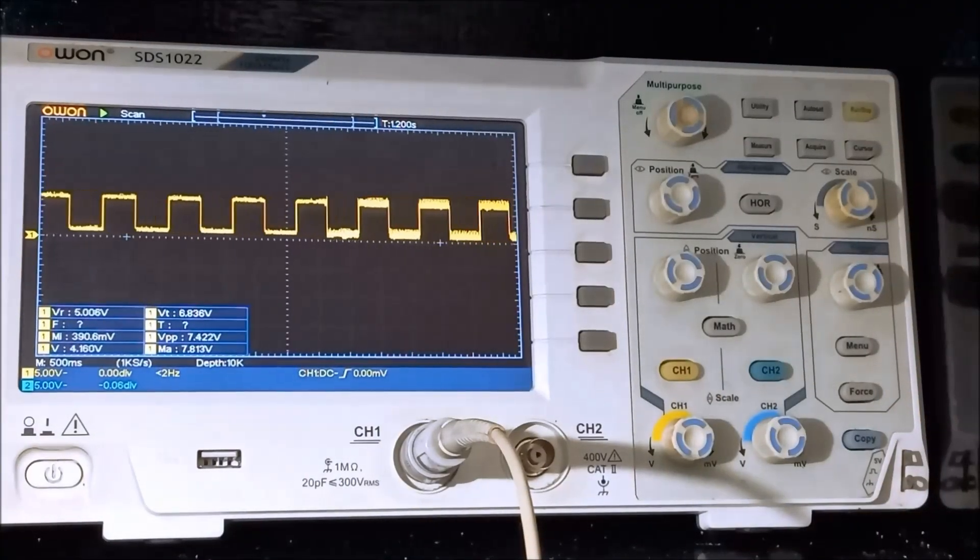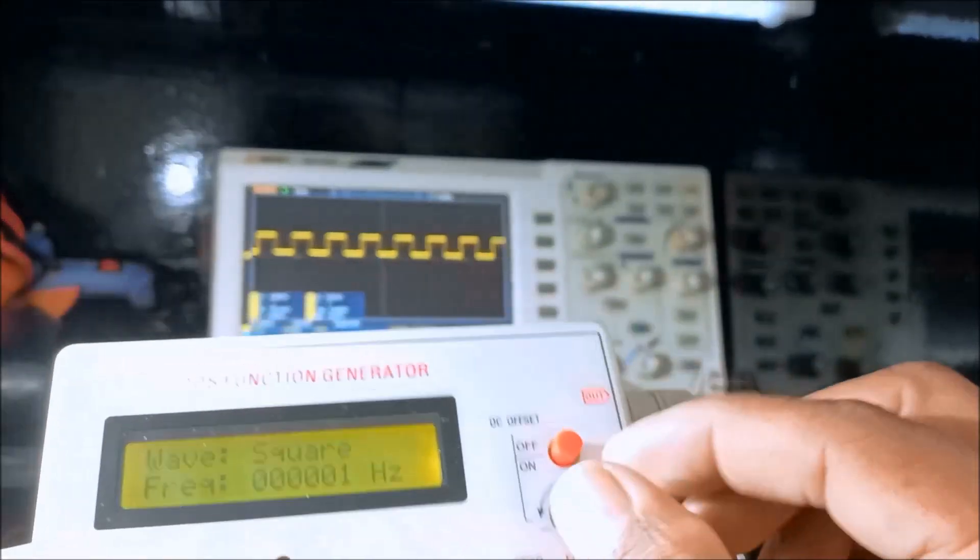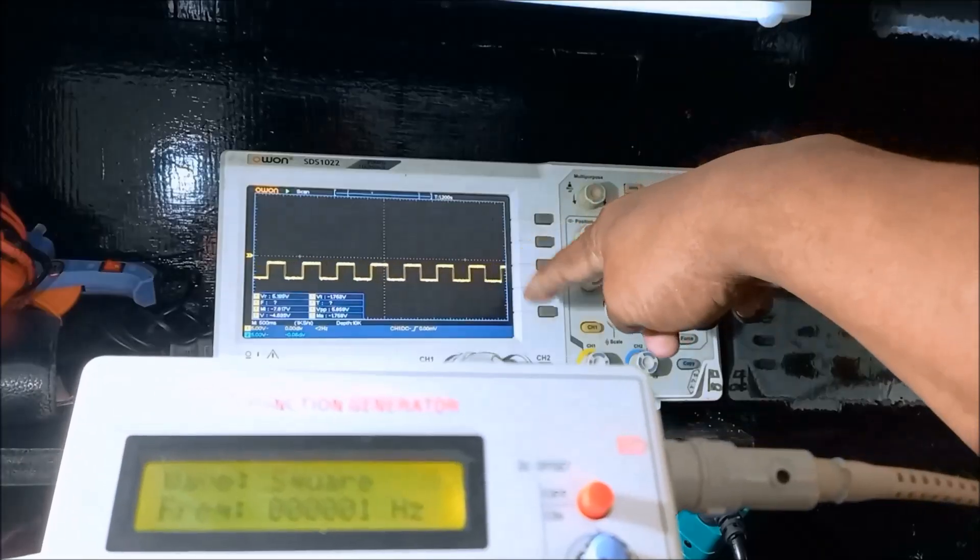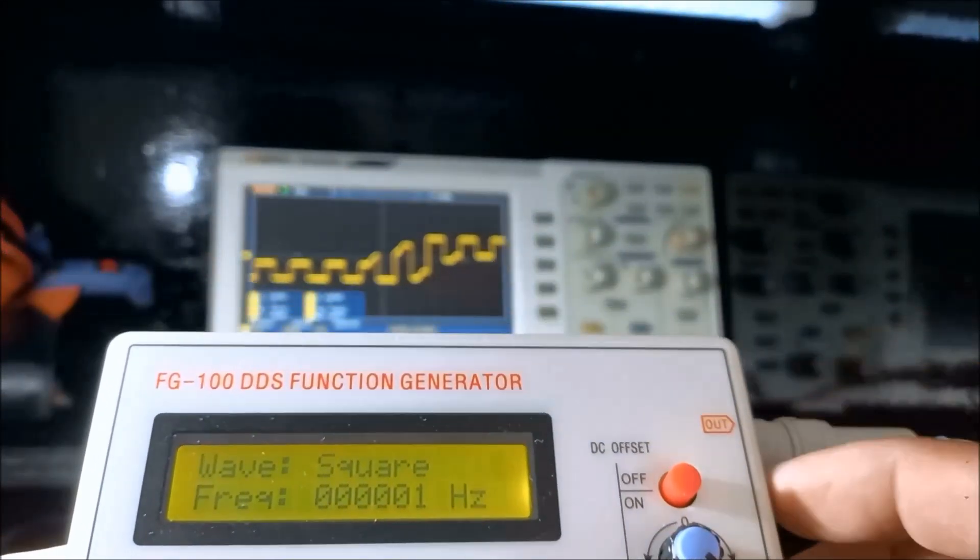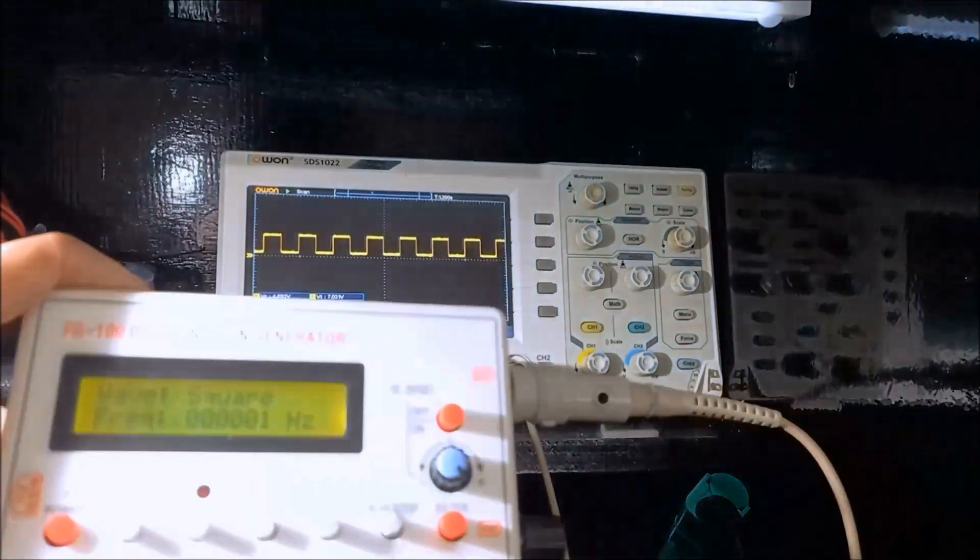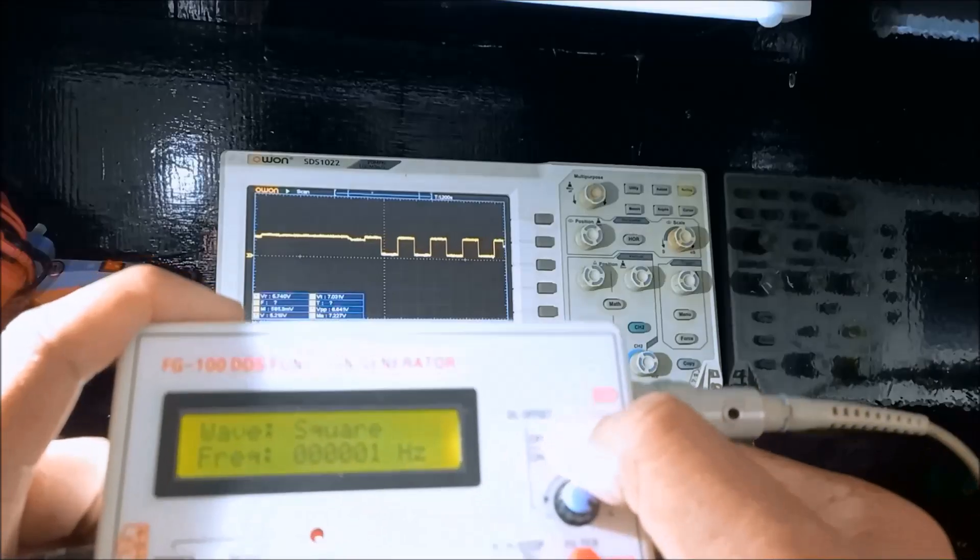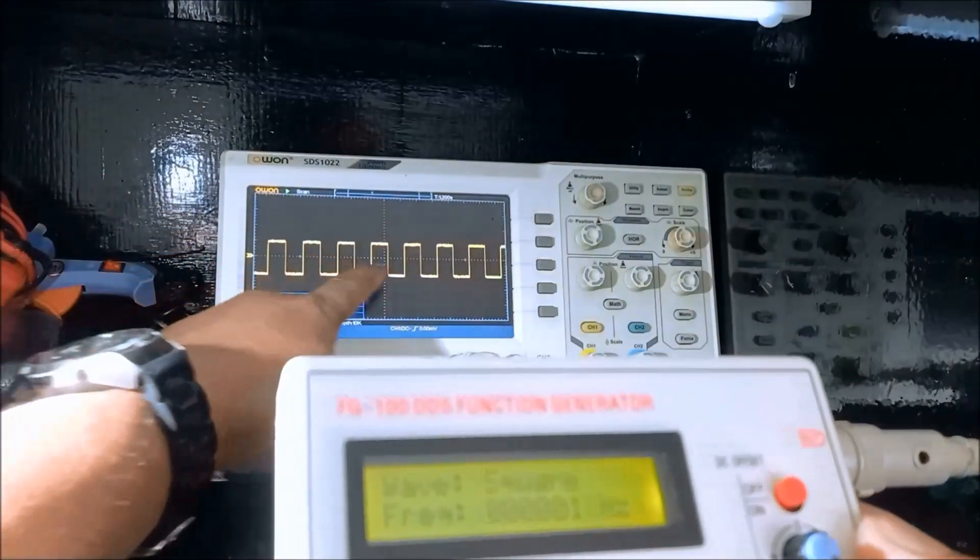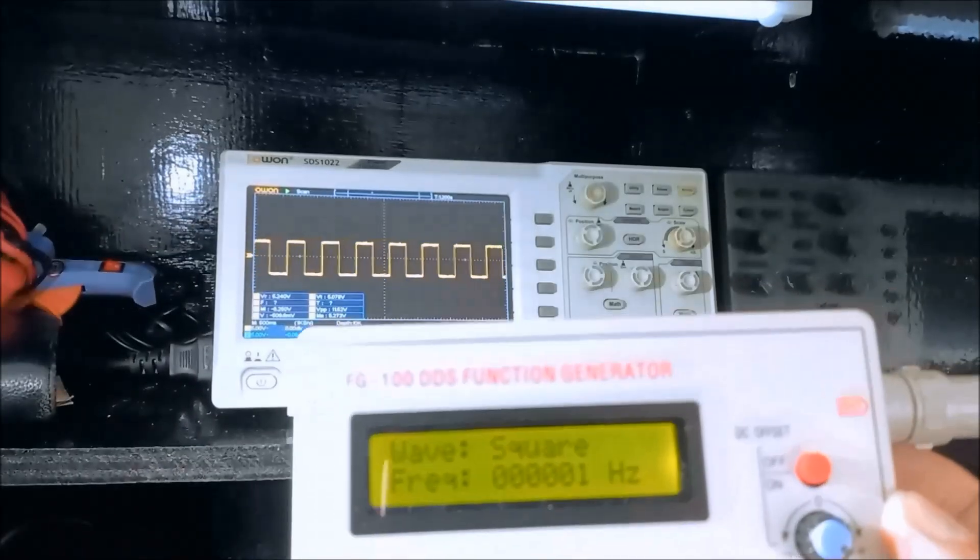That is again our waveform. By moving the offset, it will offset below. While moving it again, offsetting it above, above the zero line. That is the DC offset.